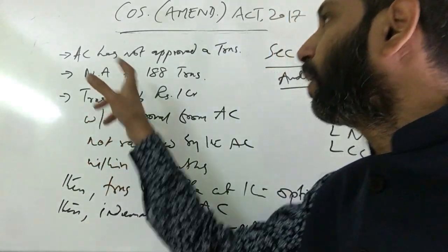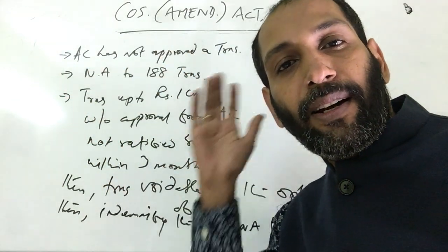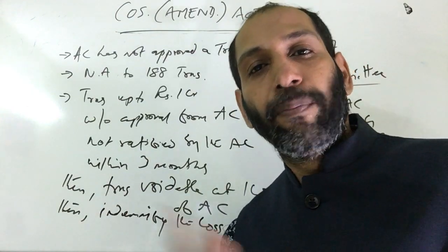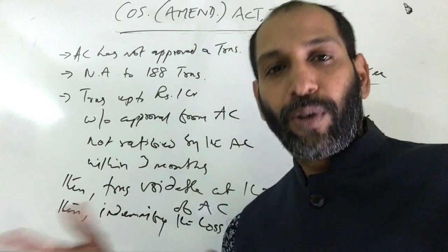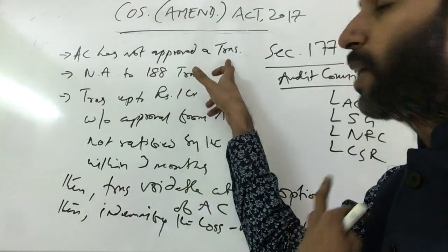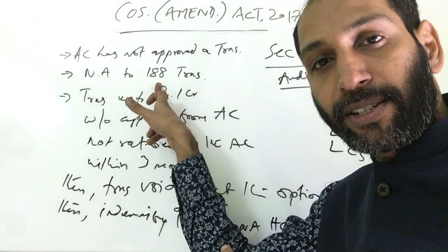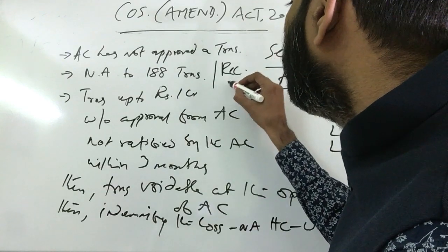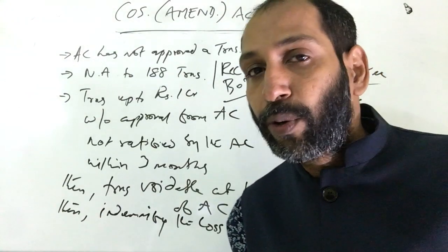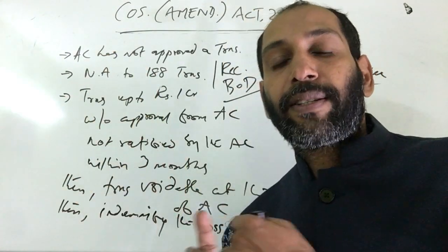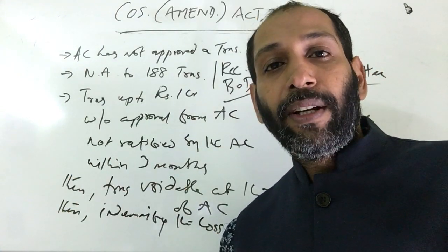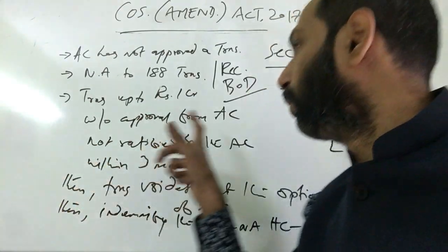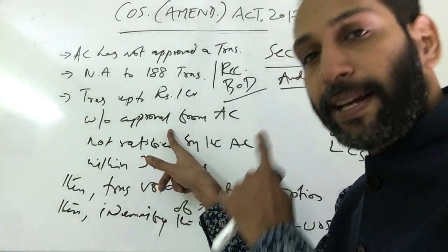The first amendment: if a transaction has not been approved by the audit committee, you know that anything not approved by the audit committee is recommended to the board. If the board does not accept it, the board reports that to the shareholders. Under the amendment, if the audit committee has not approved a transaction — one that is not a related party transaction under Section 188 — then that matter must be referred to the board.